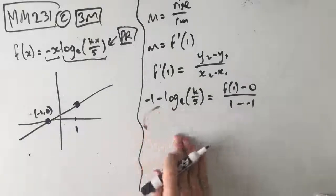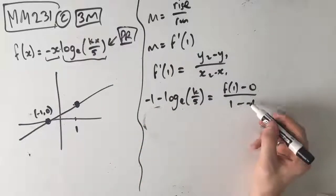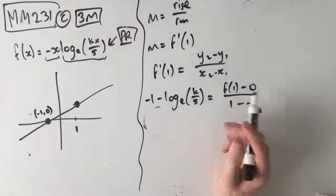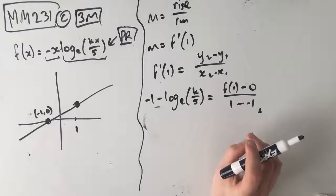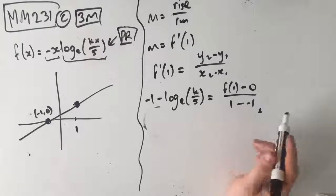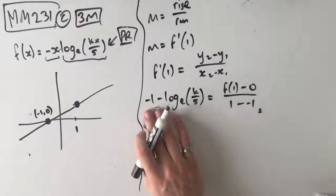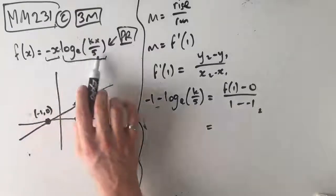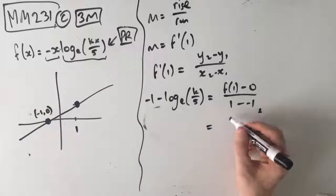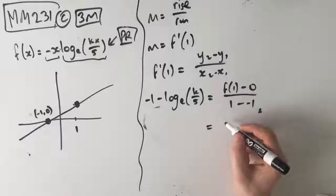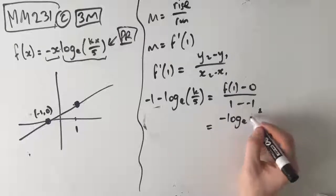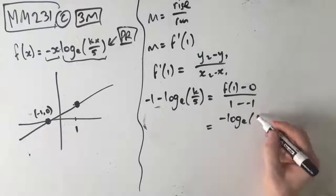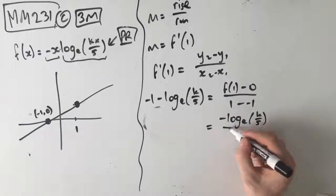1 minus negative 1 is 2, so it's 2 in the denominator. f(1) equals negative 1 times log e of k on 5, and dividing by 2 gives us negative log e of k on 5 over 2. This is our first mark.